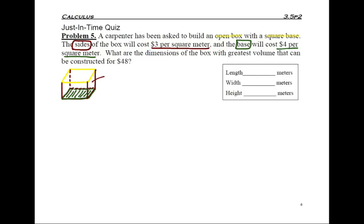We also want to insert information given by the problem. So we know that it's $3 per square meter for the sides, and there are four sides to this box. We also have the cost for the square bottom, which is $4.